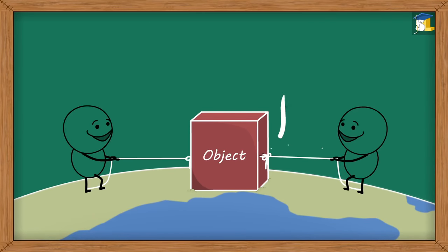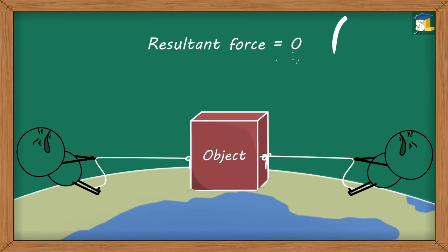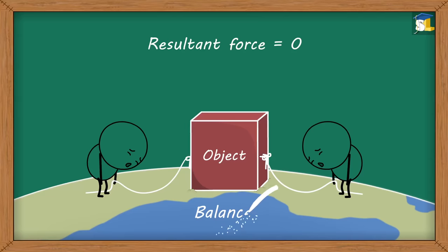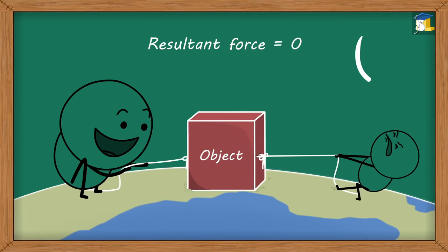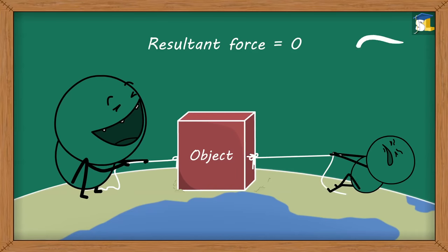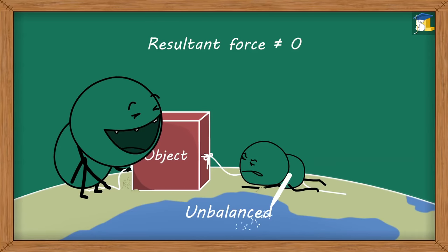When a number of forces acting on an object are such that their resultant force is zero, then the forces are said to be balanced. Whereas when a number of forces acting on an object are such that the resultant force is not equal to zero, then the forces are said to be unbalanced.